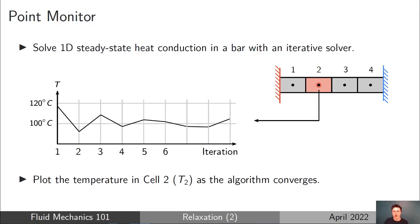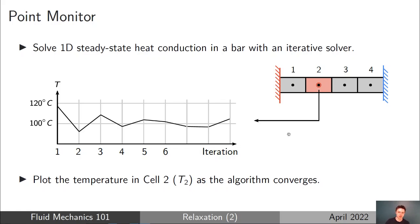Before we start talking about implicit relaxation, let's do a quick recap of explicit relaxation from the previous talk. The case we were using as an example was 1D steady-state heat conduction in a bar, solved with an iterative solver. The solution changes during every iteration, and as it converges we eventually reach that final steady-state solution. If you plot this on a graph, each iteration the temperature in the cell changes until we reach the converged solution.